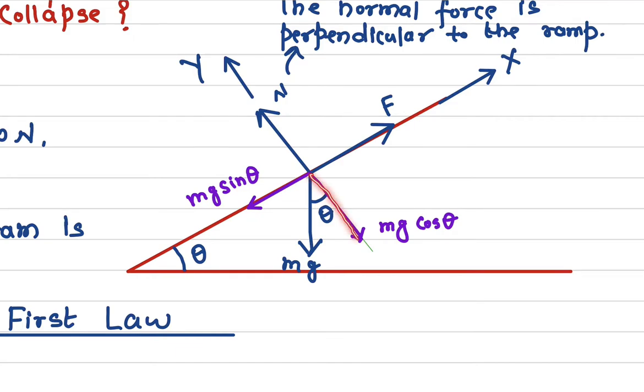This component will be cosine component mg cosine theta because this component is closer to the angle. Remember the rule: closer to the angle is always cosine component. So this is closer to the angle, so this will be mg cosine theta. And this will be mg sine theta because it is further from this angle.